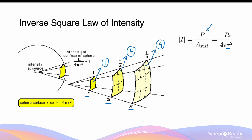So in the numerator, my power is constant. In my denominator, the value of the surface area is changing. As the light is traveling away from the source, this area is increasing, as you can see in the diagram. Since the intensity of light, or any wave, is inversely proportional to the square of the distance at which its intensity is being measured, this principle is known as the inverse square law of intensity.